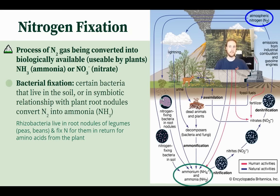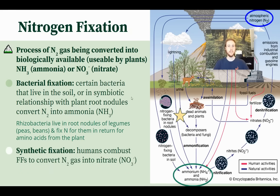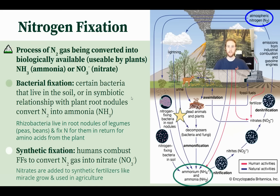We also have synthetic nitrogen fixation, where humans combust fossil fuels in order to fix nitrogen gas from the atmosphere into nitrate, NO3. This is very energy intensive, but it allows humans to produce synthetic fertilizers which contain nitrates. We then spread these over crops to increase agricultural yields. In the diagram, this is shown in red with a factory symbol to indicate it's an industrial process requiring a lot of energy input, producing nitrates used as fertilizers in agriculture.